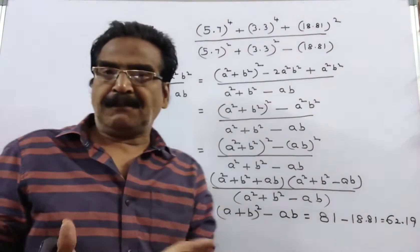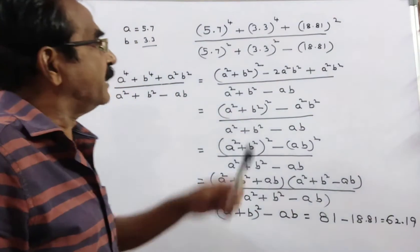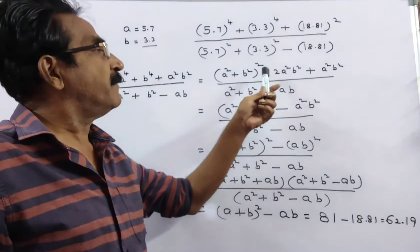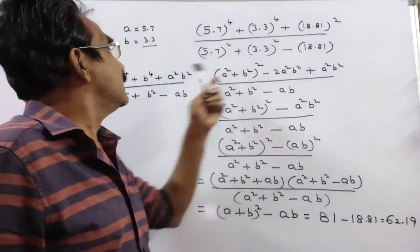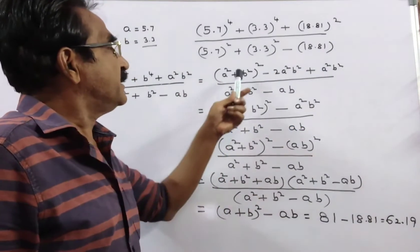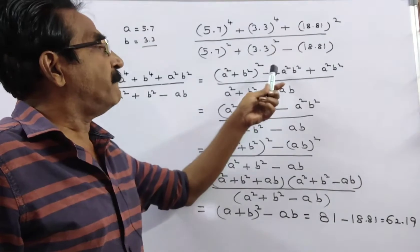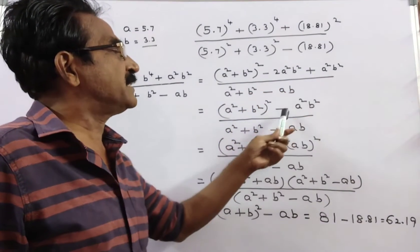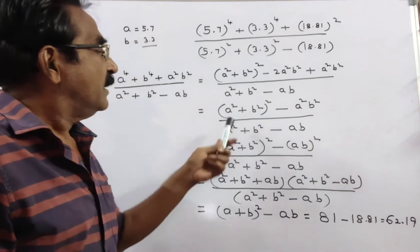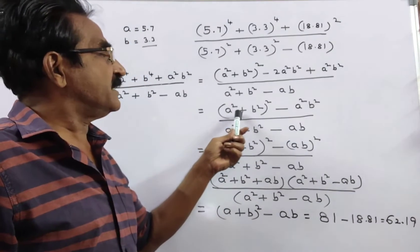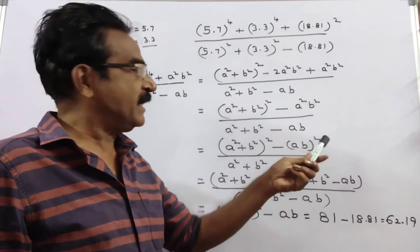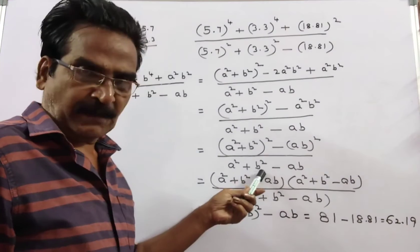Friends, A power 4 plus B power 4 can be expressed as A squared plus B squared whole square minus 2A squared B squared plus A squared B squared by the denominator. This means A squared plus B squared whole square minus A squared B squared by the denominator. This is A squared plus B squared whole square minus AB whole square by the denominator.